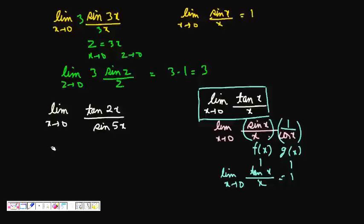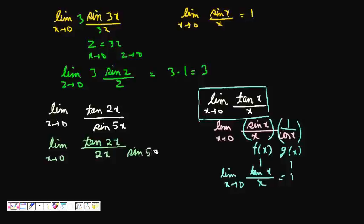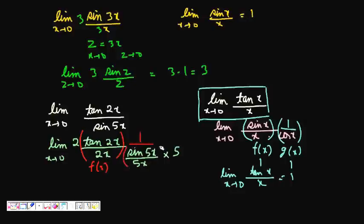Now for limit x tends to 0 of tan(2x)/sin(5x), we rewrite it by introducing tan(2x)/(2x) and sin(5x)/(5x). Multiplying and dividing appropriately, we get the constants 2 and 5 factored out, with tan(2x)/(2x) as f(x) and sin(5x)/(5x) as g(x).